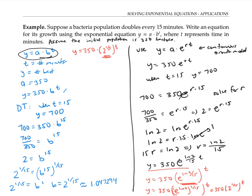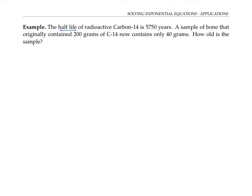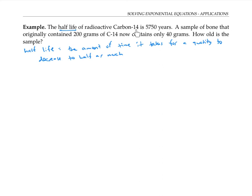You'll always be able to find two different versions of an exponential equation: the standard one, a times b to the t, or the continuous growth one, a times e to the rt. In this last example, we're going to work with half-life. Half-life is pretty much like doubling time — it just means the amount of time it takes for a quantity to decrease to half as much as we originally started with. We're told that the half-life of radioactive carbon-14 is 5,750 years, meaning it takes that long for a quantity of radioactive carbon-14 to decay so that you just have half as much left.